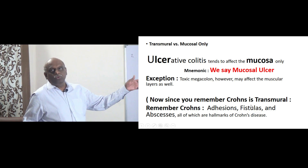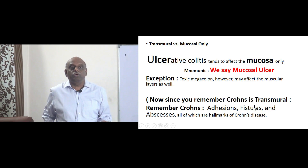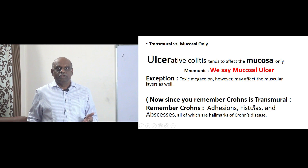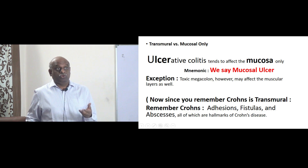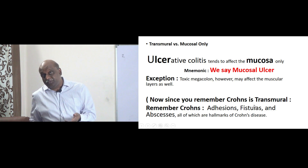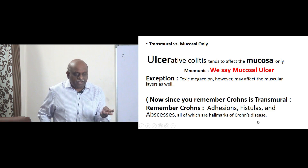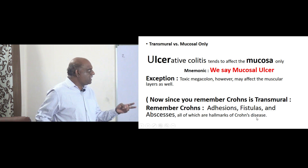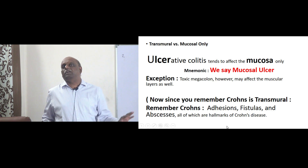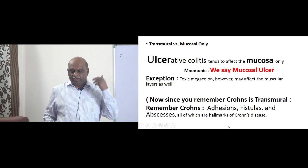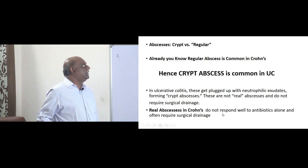Ulcerative colitis is only mucosa; Crohn's is transmural. You can remember all the remaining things from that. Adhesions, fistulas, abscesses — they are all hallmarks of Crohn's disease, is what you need to remember.